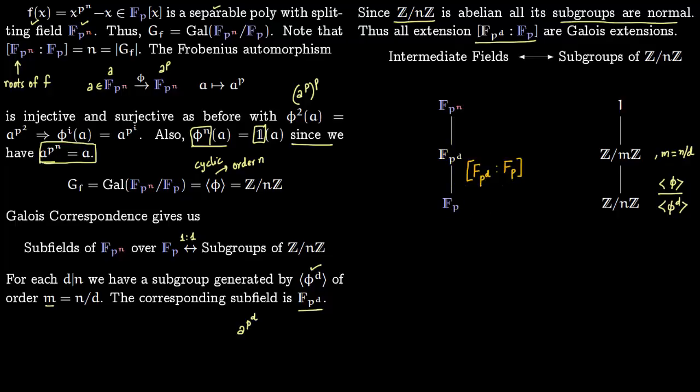This is generated by this subgroup. This is a factor group and this is a normal subgroup because this is an abelian group.